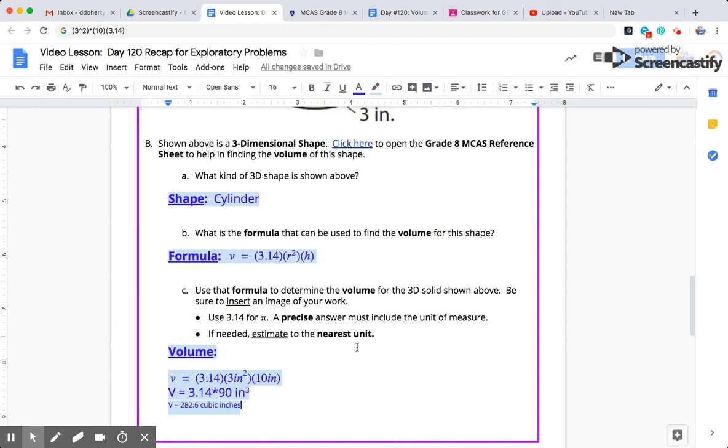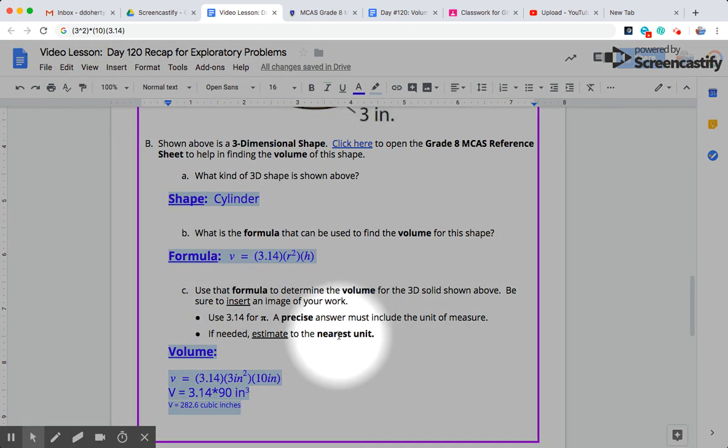And we were asked ultimately to round to the nearest unit or estimate to the nearest unit. So hopefully you recognize the nearest unit for 282.6 cubic inches would be 283 cubic inches.